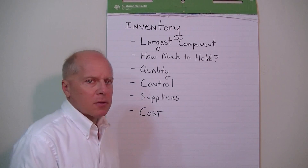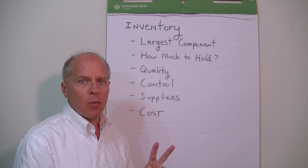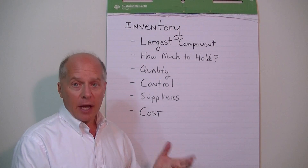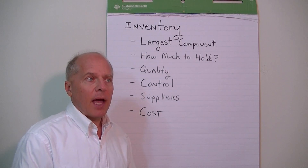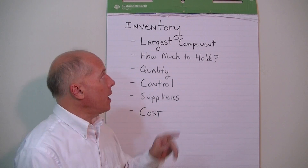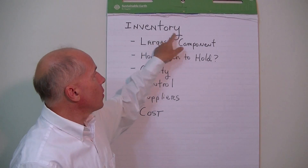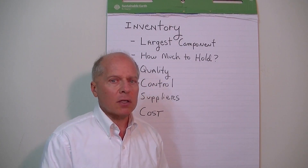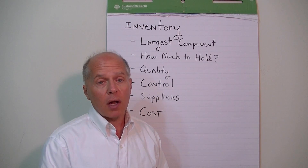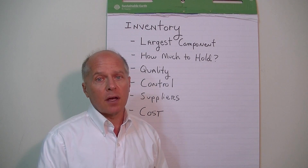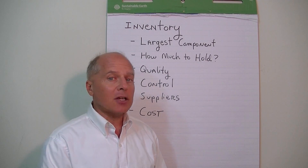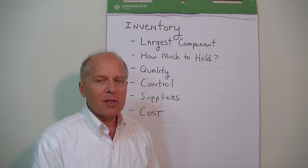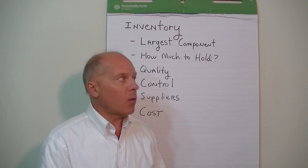We've talked about two components of working capital so far — cash and accounts receivable. Now we want to talk about a third component of working capital: inventory. If you're a retail business and you sell products on the floor, or you distribute products to other retailers, or you manufacture products, then you're dealing with inventory.